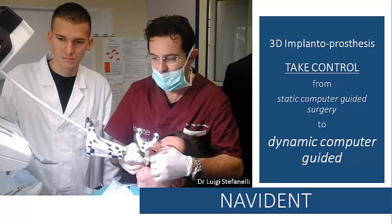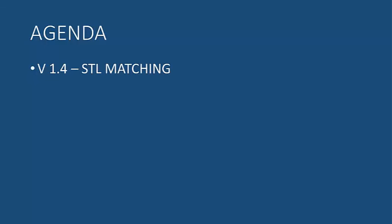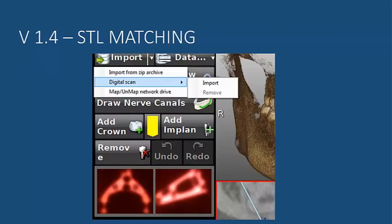This video features the new version of Navident 1.4, specifically the SDL matching feature, which is quite important for Navident. You can activate that feature using Import, then Digital Scan, and then Import.